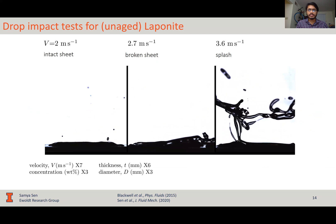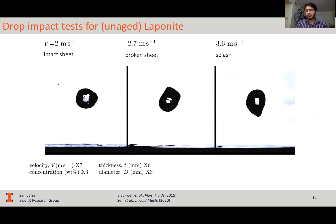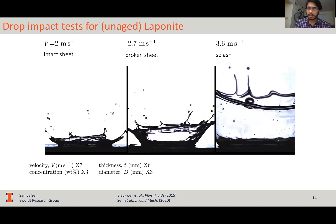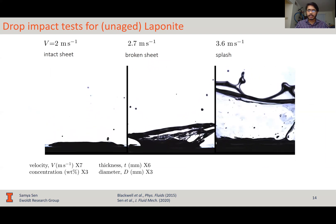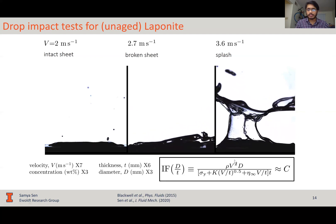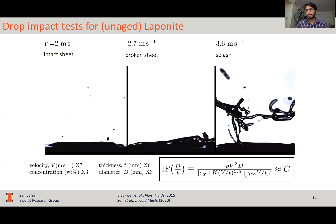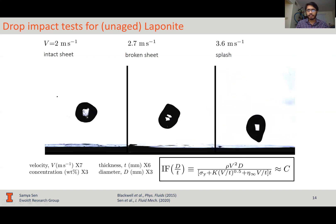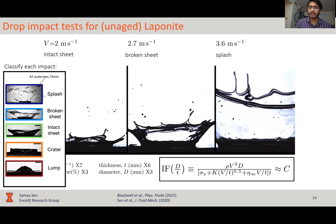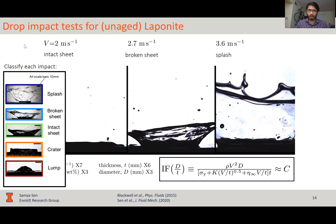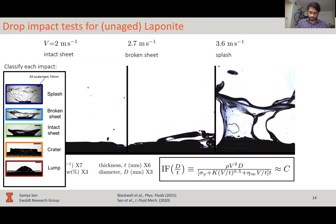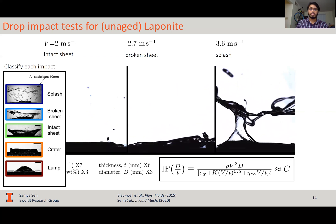Now, we did these tests for this high-dimensional multivariate parameter space, so we need to collapse the data, the multidimensional data, into a single dimensionless group using this formulation. Also, we can classify the qualitative drop impact behavior using this qualitative classification criterion and plot what are called impact regime maps in order to study these drop impact study tests more conveniently.